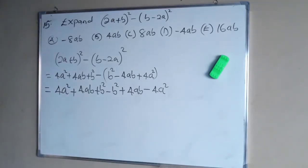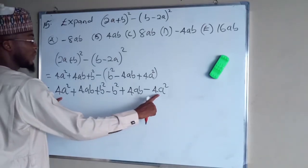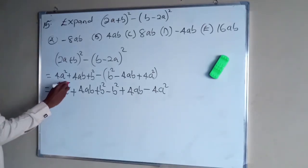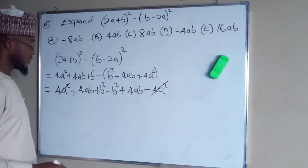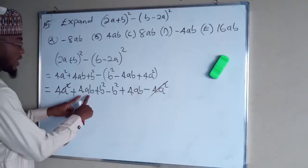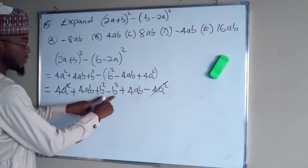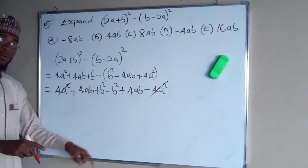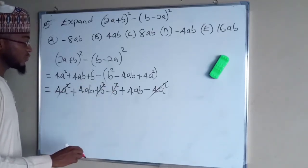Now we collect the like terms. We have 4a squared here and 4a squared here, but this is negative while this one is positive, so they cancel out. We have b squared and b squared. That one is positive while the other one is negative, so they cancel out too.